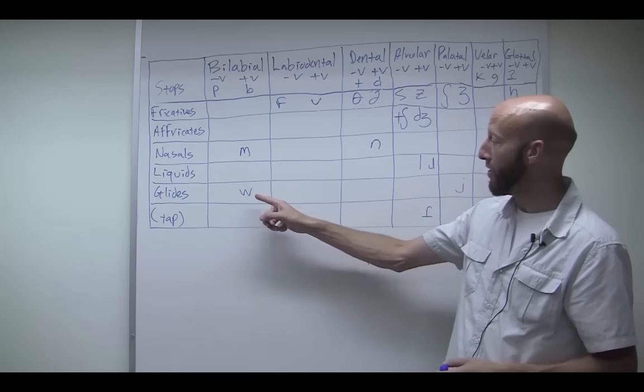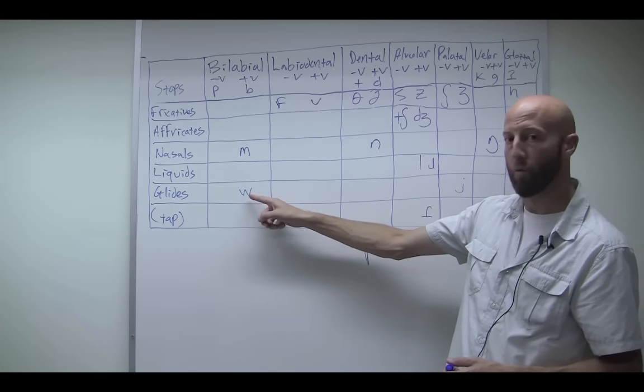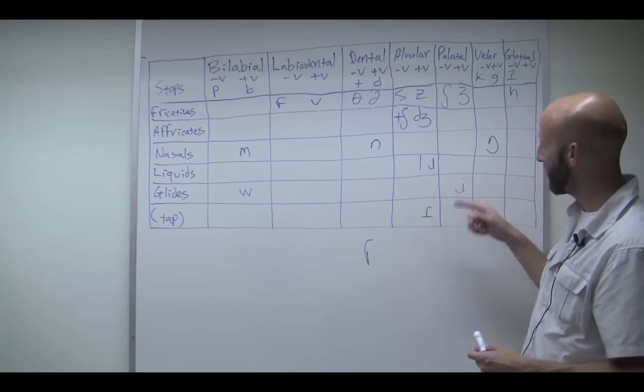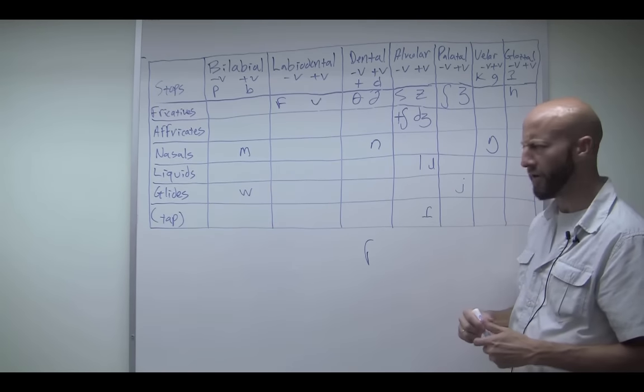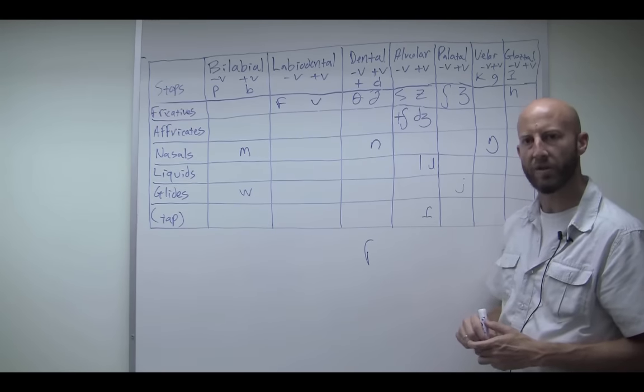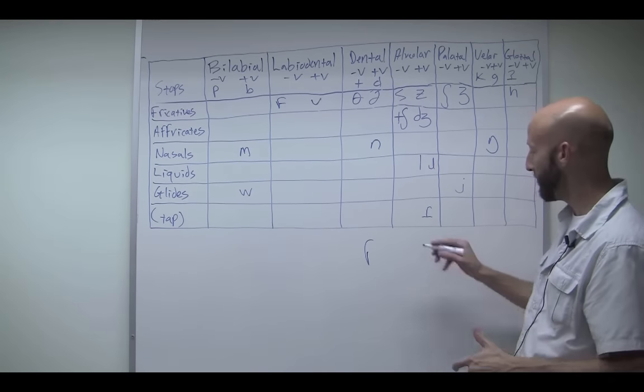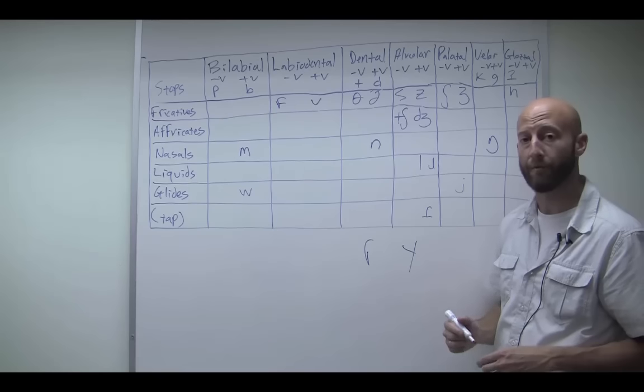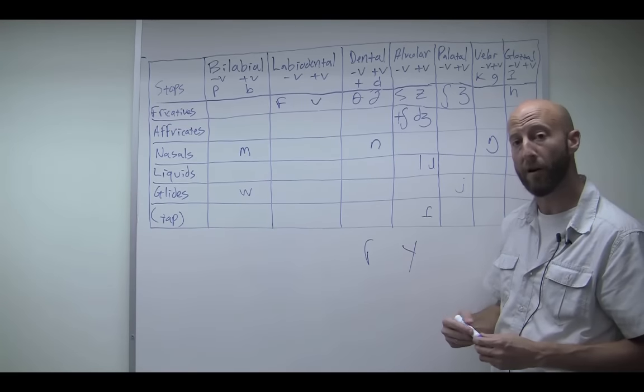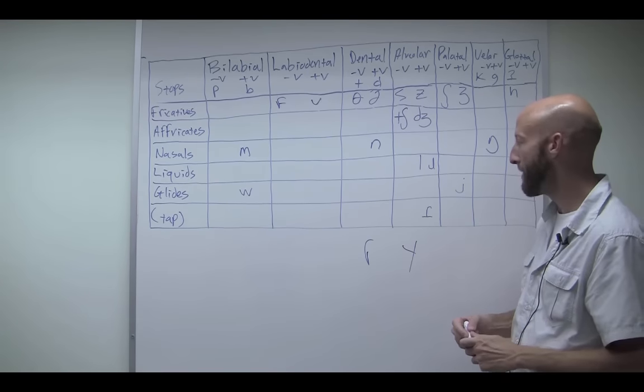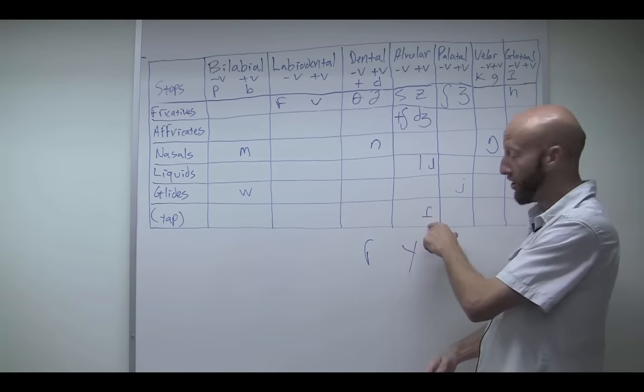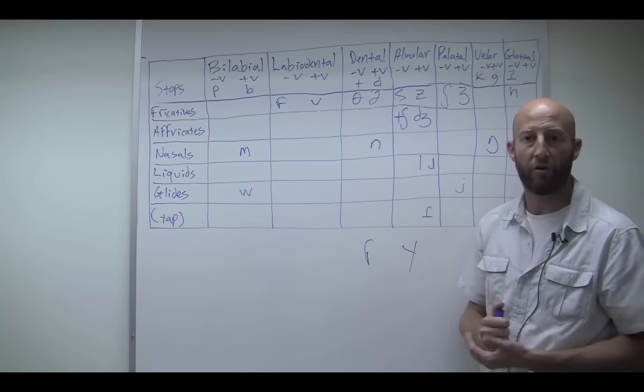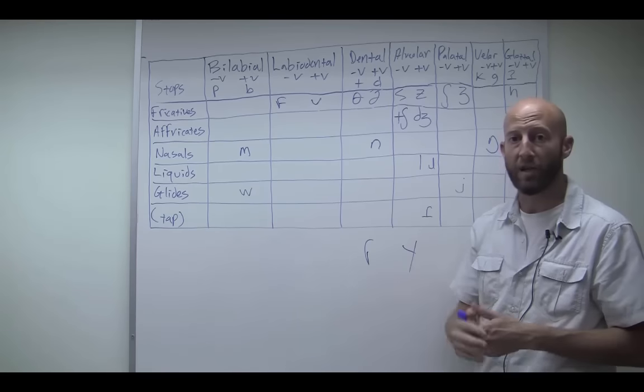Then we have our glides, starting with W, W, and Y, Y. That's also something to draw your attention to because you see, why is that written with a J but it represents the Y sound? It's because this sound in the International Phonetic Alphabet also represents a different sound. I'll let you look it up on your own to figure out what it sounds like. Another thing I want to draw your attention to is the tap sound. The tap sound is maybe not necessarily represented in the chart that you've seen in a book somewhere, but I want to bring it up here because it happens a lot in English.